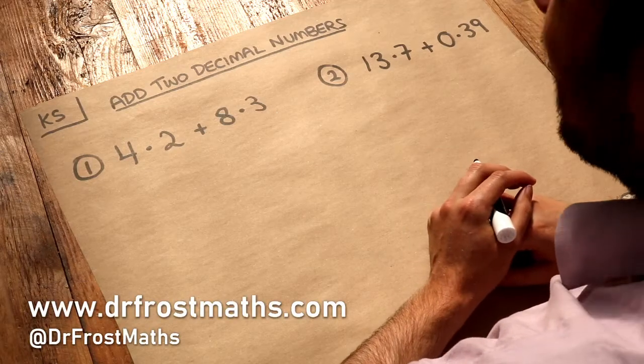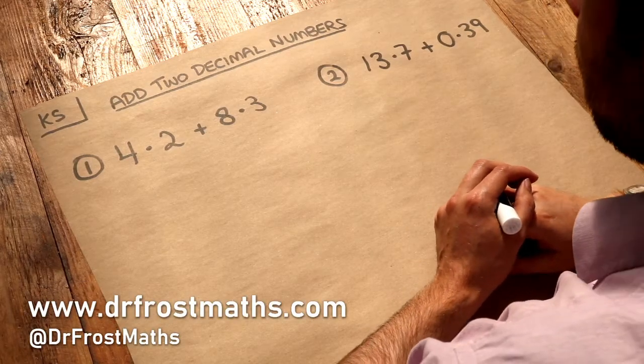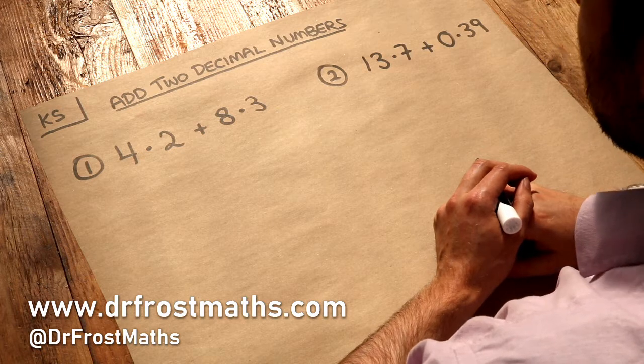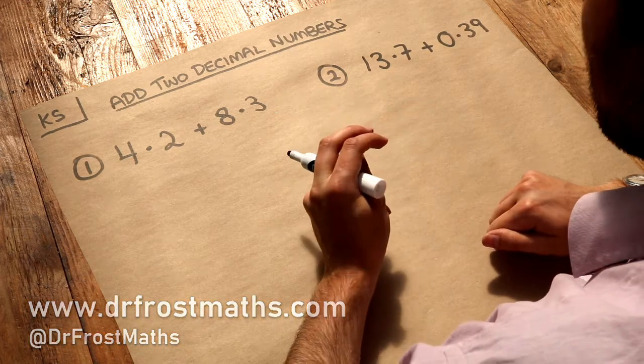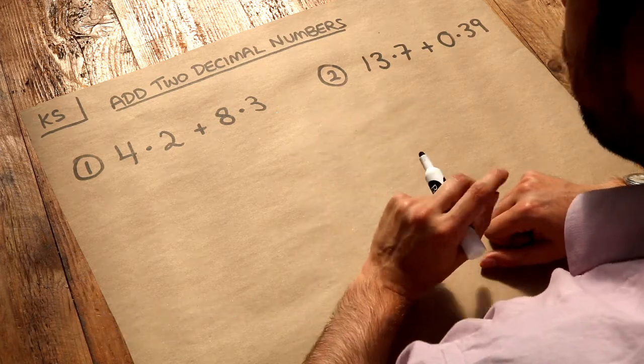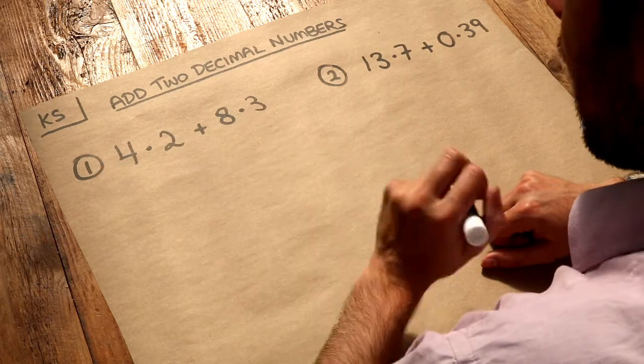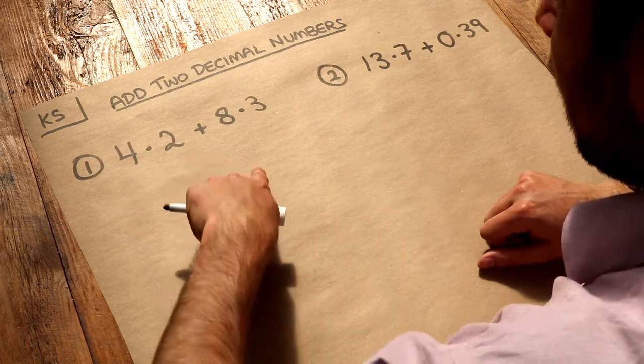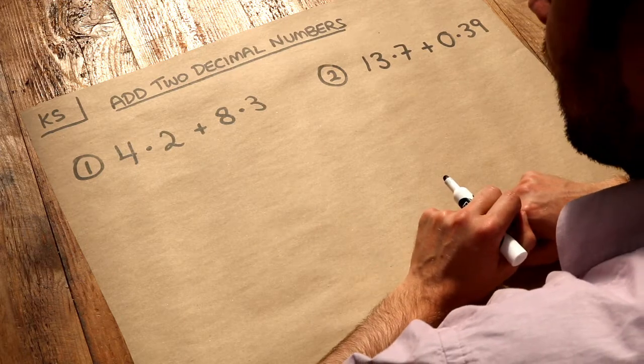Hello and welcome to this Dr. Frost Maths key skill video on adding two decimal numbers. Now the strategy here is exactly the same as adding whole numbers. We just use column addition and make sure that each digit is in the same column if it has the same place value.